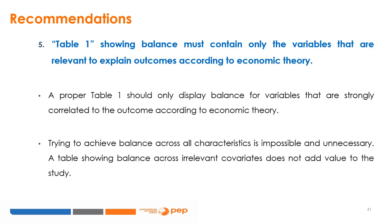Table 1 showing balance must contain only variables that are relevant to explain outcomes according to economic theory. The first table in an RCT-based study generally aims to show good balance across covariates, but it should only display balance for variables strongly correlated to the outcome according to economic theory. Trying to achieve balance across all characteristics is impossible and unnecessary, and a table showing balance across irrelevant covariates does not add value to the study.